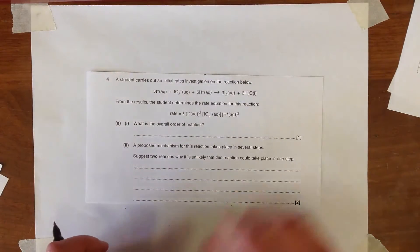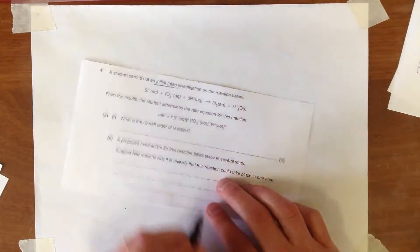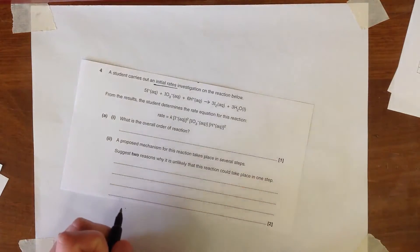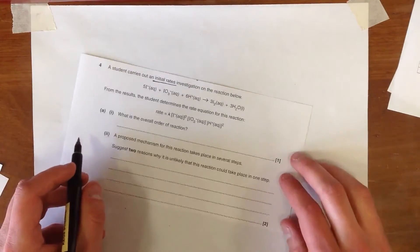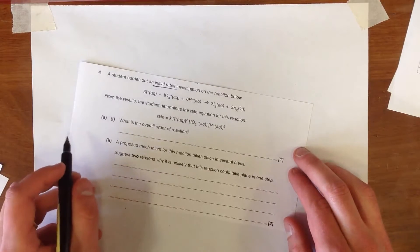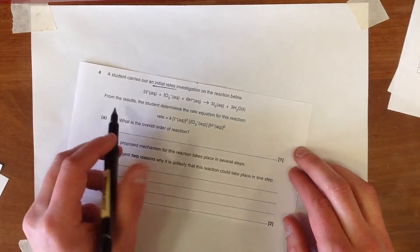Question 4 is a rates of reaction question and the key thing here is initial rates investigation. What we've got here is the equation for the reaction that's taking place. It's a syn-proportionation reaction between iodide and iodate.